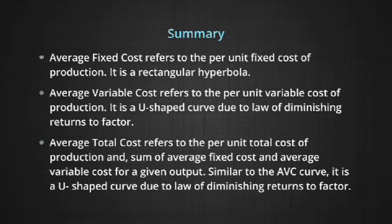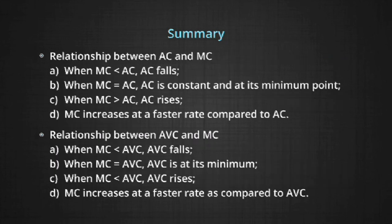To summarize: average fixed cost refers to the per unit fixed cost of production — it is a rectangular hyperbola. Average variable cost refers to the per unit variable cost of production — it is a U-shaped curve due to the law of diminishing returns to a factor. Regarding the relationship between AC and MC: when MC is less than AC, AC falls; when MC equals AC, AC is constant and at its minimum point; when MC is greater than AC, AC rises. MC increases always at a faster rate compared to AC.